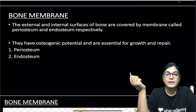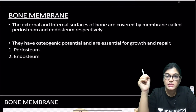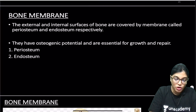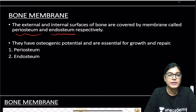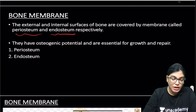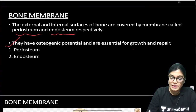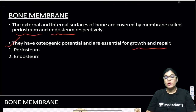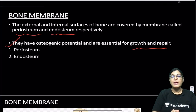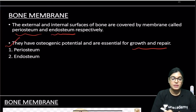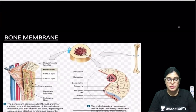Bone is covered on the outer aspect by a membrane called the periosteum, and on the inner aspect by a membrane called the endosteum. Both have osteogenic potential and contain cells required for growth and repair.